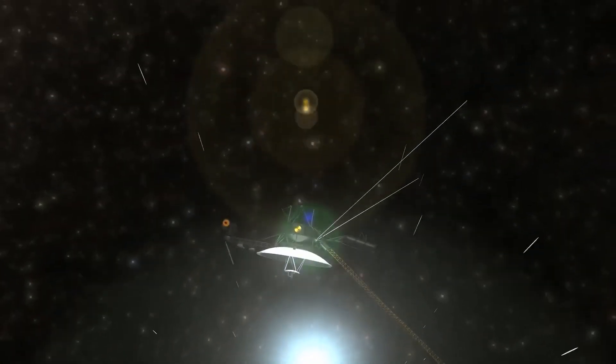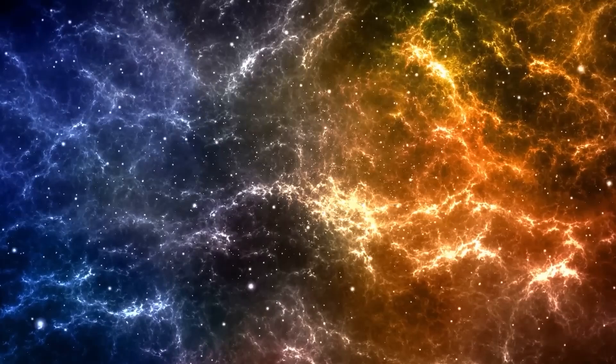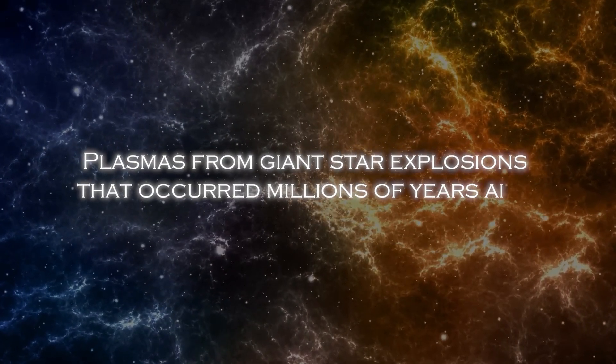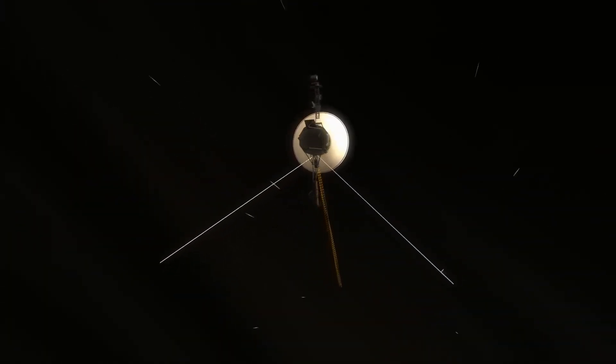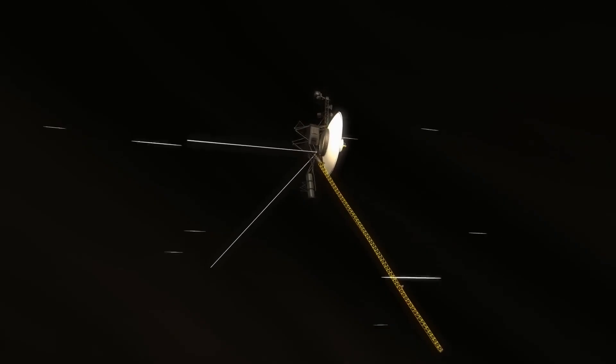Now, Voyager 1 has detected the presence of 300 unknown objects passing through space. This discovery has completely changed our understanding as these objects have been found to be plasma from giant star explosions that occurred millions of years ago. Join us on this journey through the cosmos to find out what these objects discovered by Voyager 1 are all about.